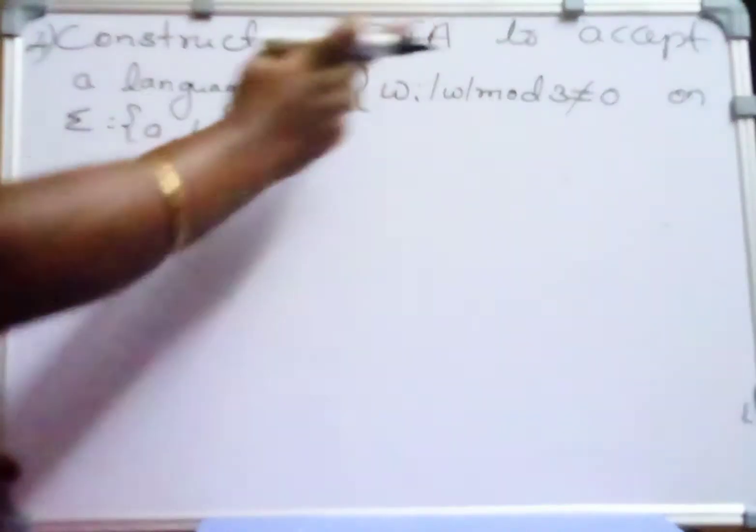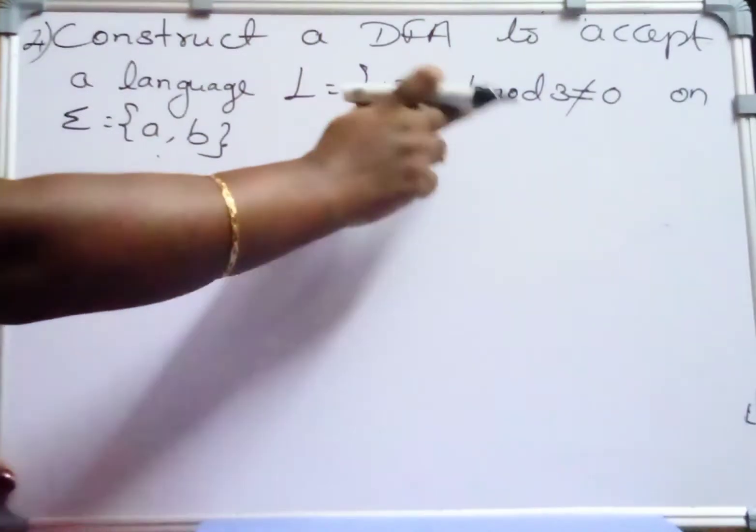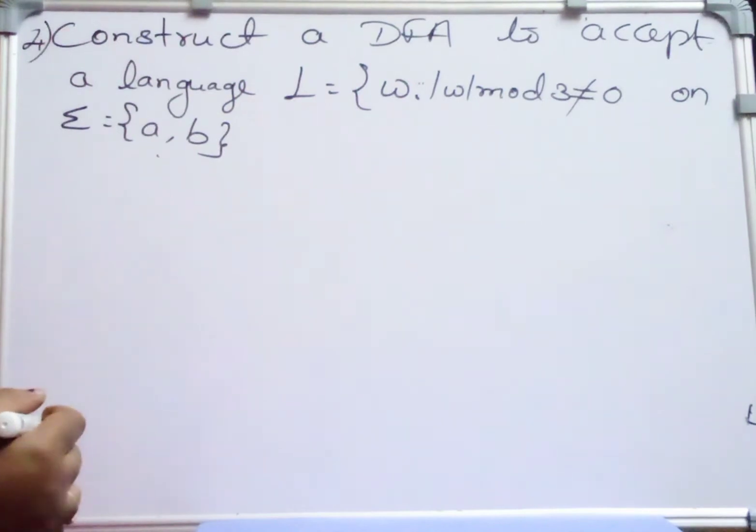Construct a DFA to accept a language L equal to W where W mod 3 not equal to 0 on summation equal to A comma B.